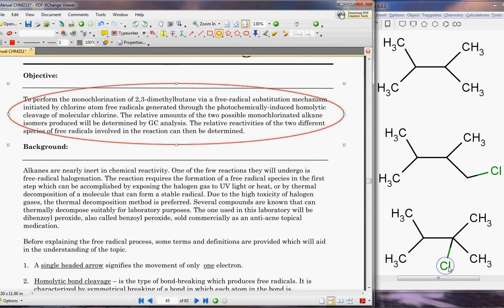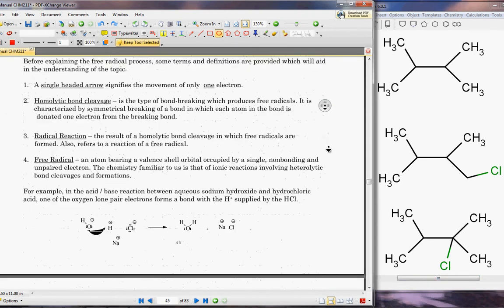Whereas down here, this would be on a tertiary hydrogen. The reason for that is because this carbon is bonded to three different carbons. So that would be a tertiary hydrogen substitution. We are going to essentially be looking at adding chlorine and then studying which one of these reactions occurs more.